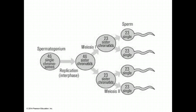This slide shows a diploid precursor sperm cell called a spermatogonia, which is undergoing meiosis 1 to produce 2 haploid cells with chromatids still present. These 2 haploid cells will then enter meiosis 2 to become 4 haploid sperm with no chromatids. A similar process occurs in the ovary to create haploid eggs.